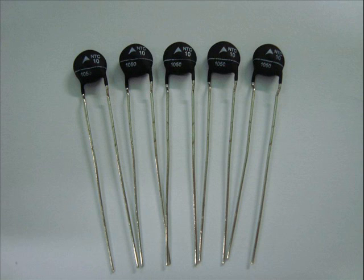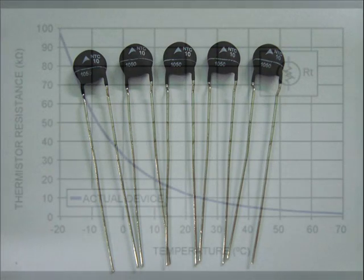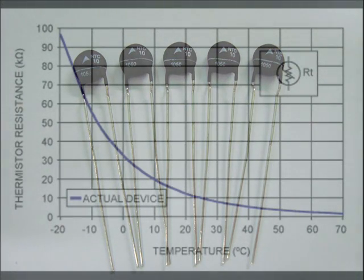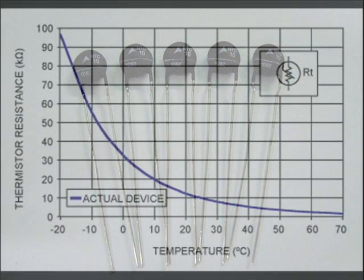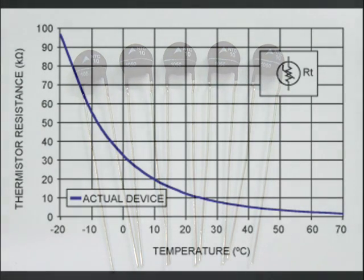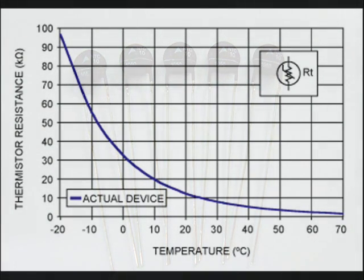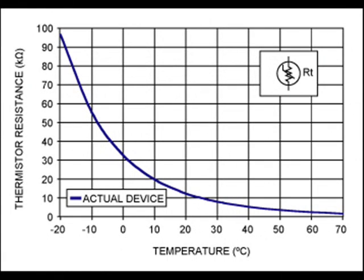The NTC, negative temperature coefficient thermistor, decreases its resistance as temperature increases. We'll be using the NTC 10K thermistor. It's called a 10K thermistor because at 75 degrees Fahrenheit, it has a resistance close to 10,000 ohms. This curve shows how the resistance of thermistor changes between minus 30 degrees centigrade and 70 degrees centigrade.